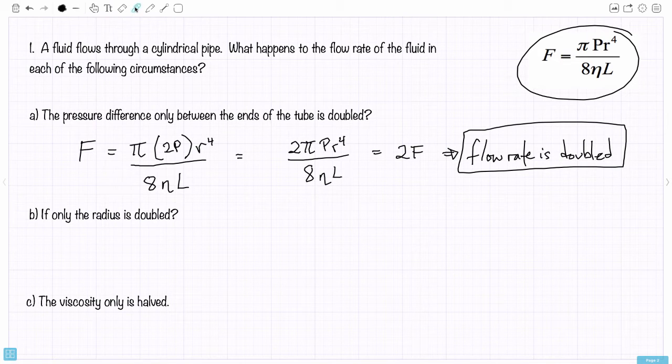Now in question B, suppose if only the radius is doubled, what would happen to the flow rate? We'll do the same thing, same kind of work. The effect on the flow rate is, we have π times P.